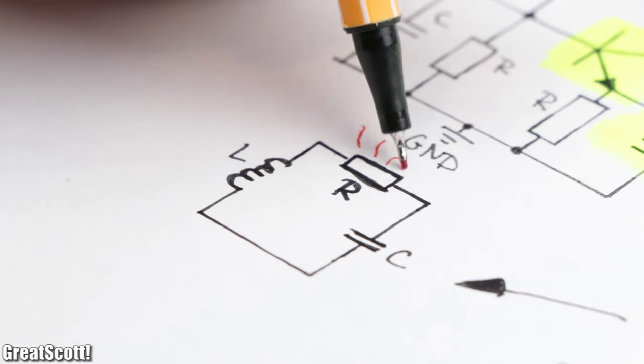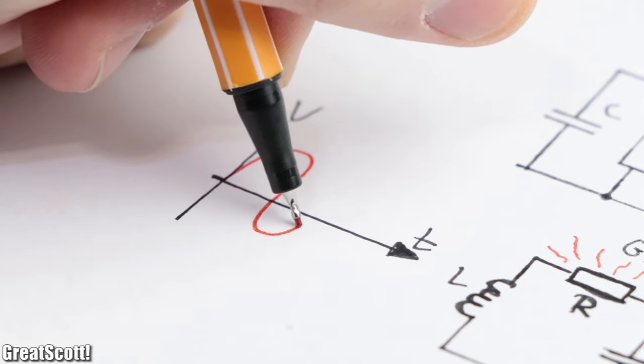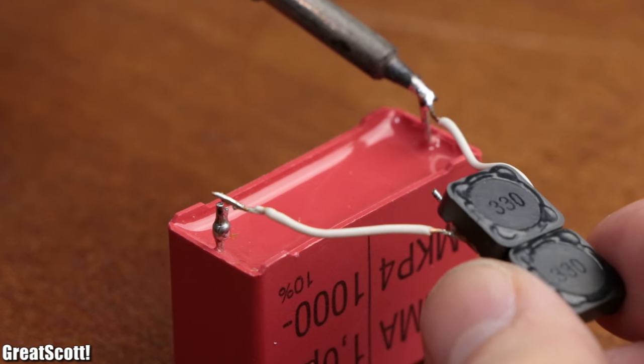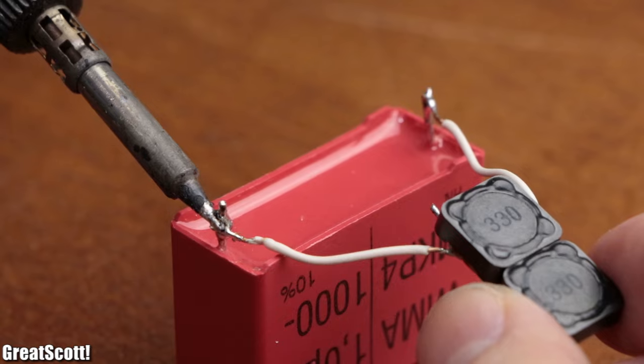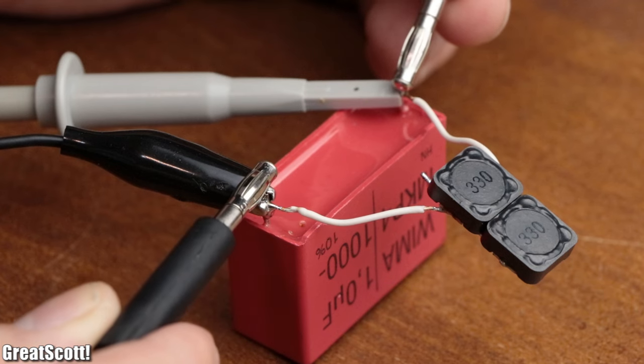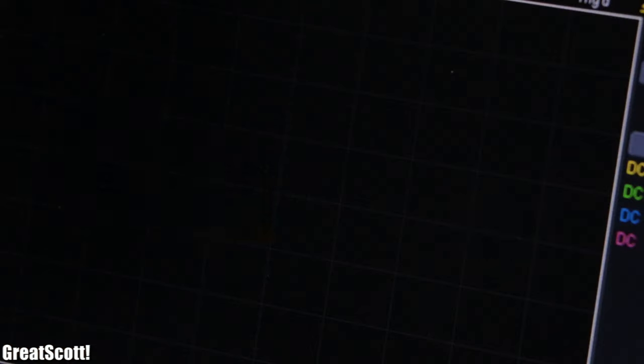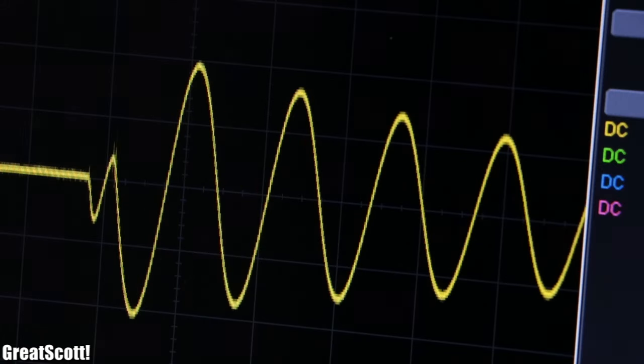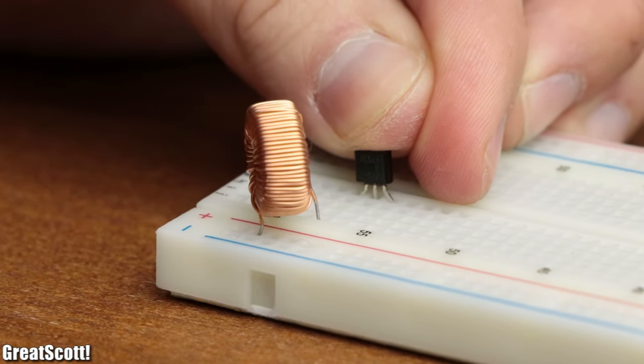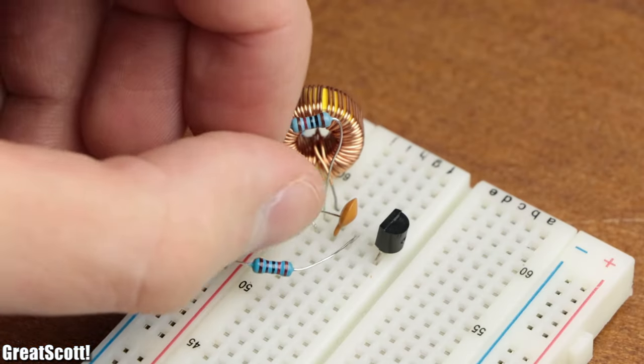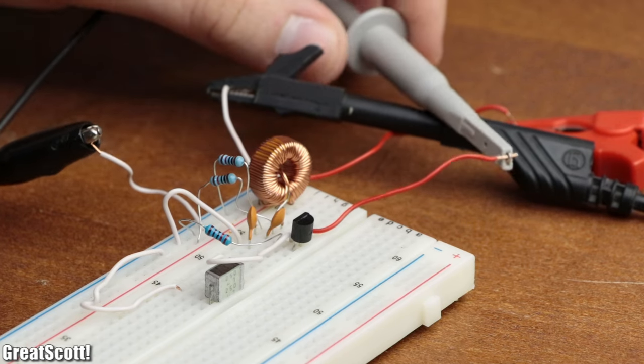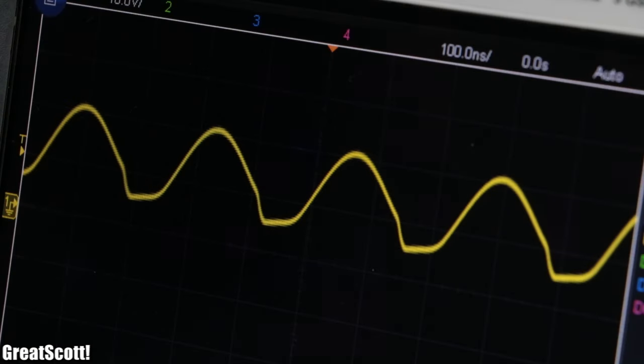But since there are always parasitic resistances, the oscillation would die off fairly quickly, which we can confirm if we create a practical LC tank circuit, apply energy, disconnect the supply, and observe the occurring oscillation on the oscilloscope. That is why we utilize the NPN transistor, whose job is to provide continuous energy for the tank circuit so that the oscillation stays stable and thus creates a sine voltage.